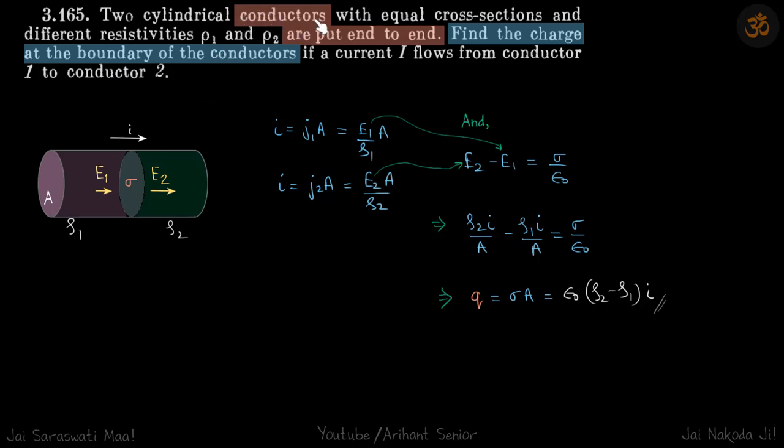We have two cylindrical conductors that are put end-to-end. For these two conductors, the resistivities are given as Rho1 and Rho2, so they are made of different materials. Otherwise, their cross-sectional area of the common region is the same.